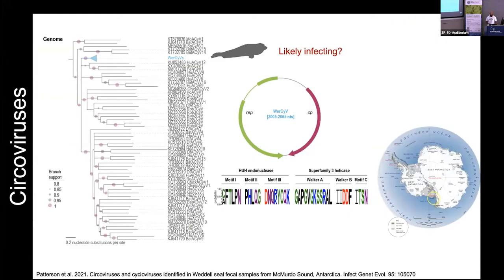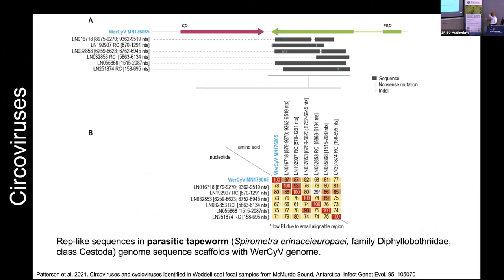We've also worked with Weddell seals. We've done a lot of fecal sampling because these seals come out to sea ice to give birth to pups, allowing us to sample mothers and pups. We've taken vaginal swabs, nasal swabs, and a lot of fecal samples. In about 80 fecal samples, we find one group of virus that is very dominant — a member of the circovirus-related family. In the replication-associated protein, we start seeing in genomes of parasitic tapeworms and cestoids these integrated sequences full of indels and stop codons. So we can likely assign a putative host to these viruses — they're actually infecting nematodes. Nematodes are very important in Weddell seals, pretty much lining their guts and helping prime their immune system constantly.